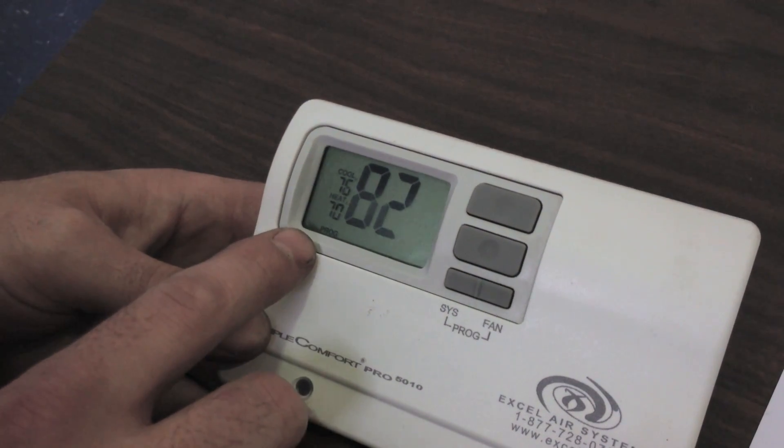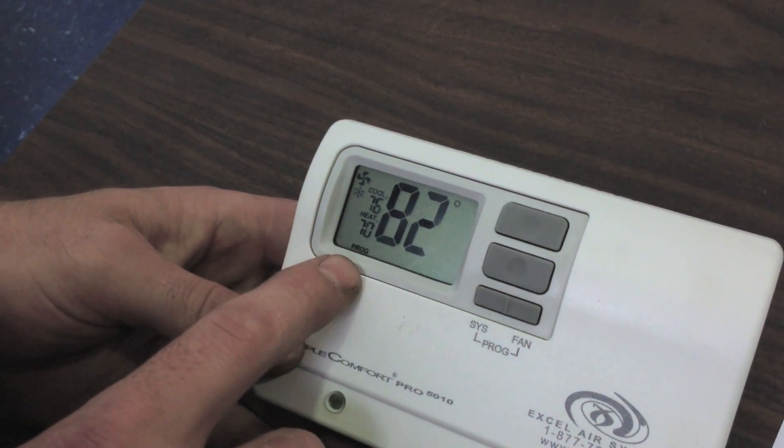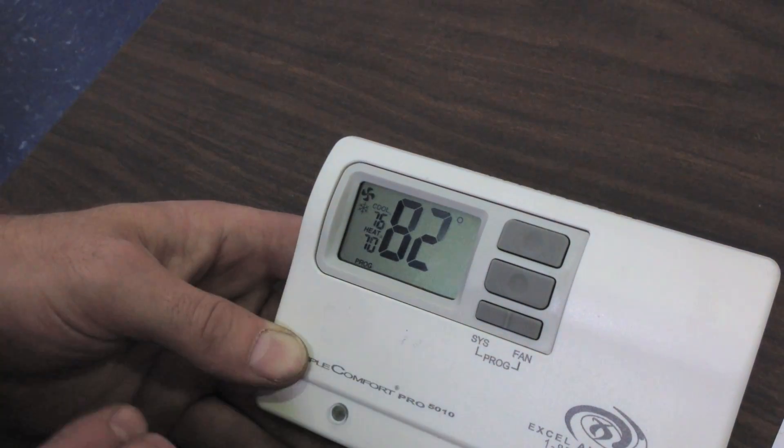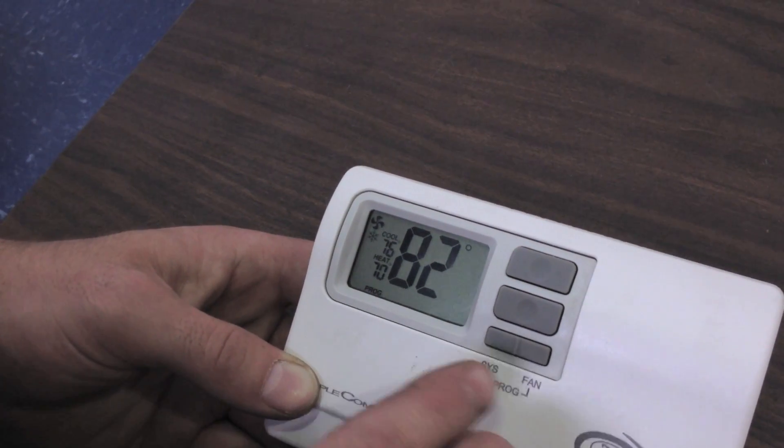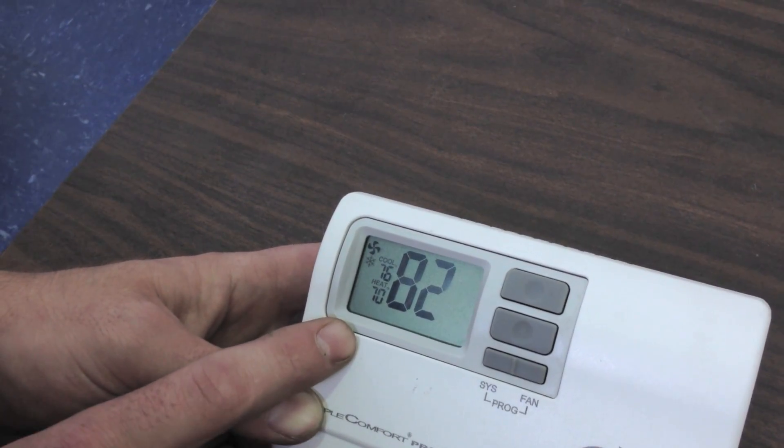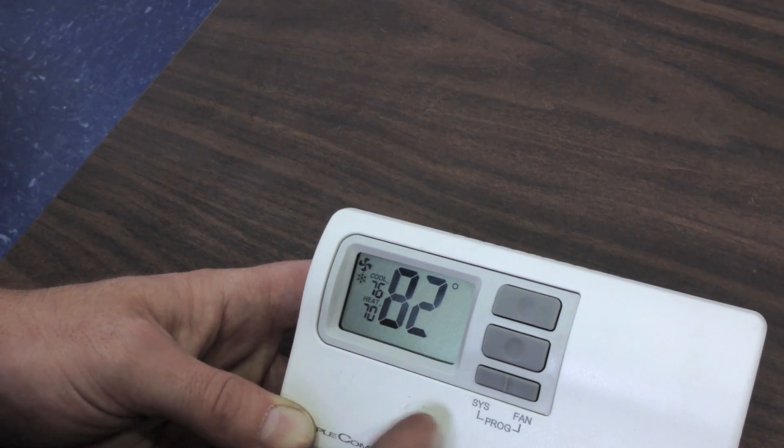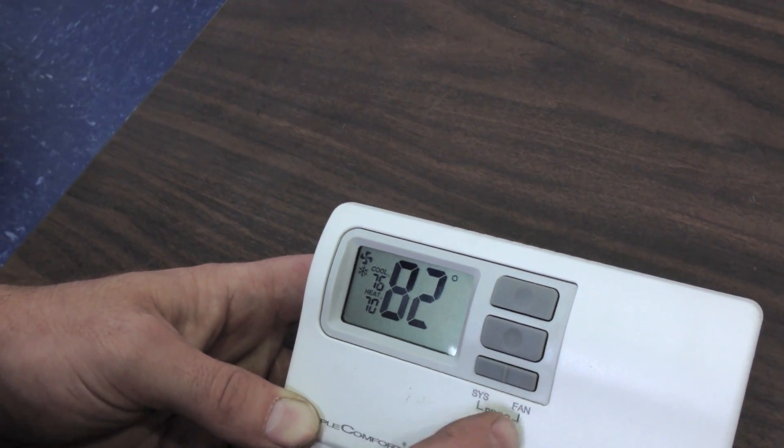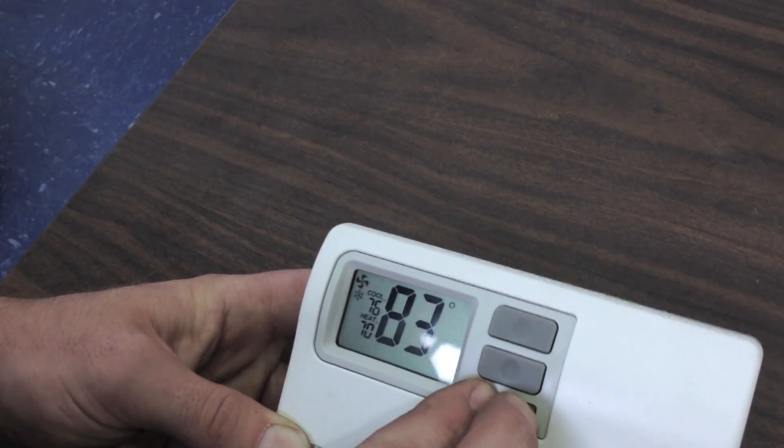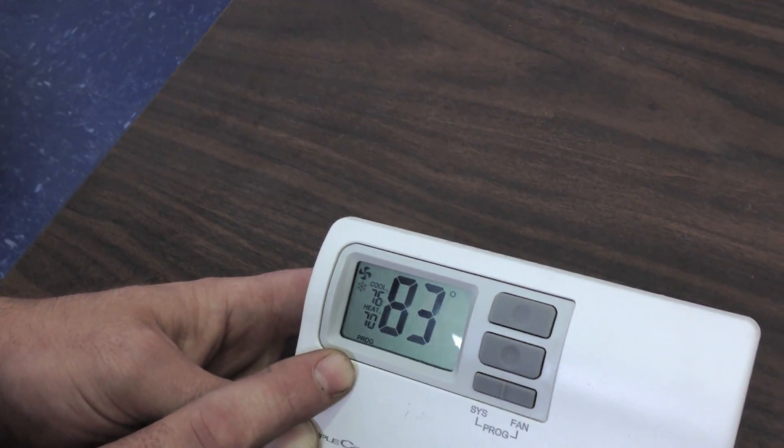And now notice we have P-R-O-G displaying in the bottom corner, meaning it's running our program. If that word is not there, you simply push the system and fan button one time at the same time. And the word P-R-O-G disappears. And now it is a regular manual thermostat. To reinstate your program, push system and fan at the same time just for one second. And the word P-R-O-G reappears. And your program will again run.